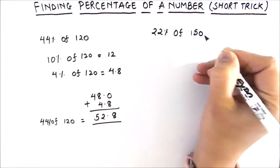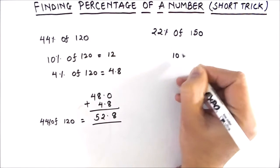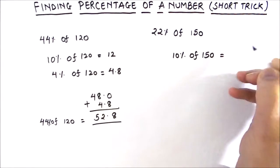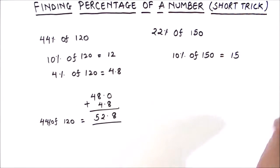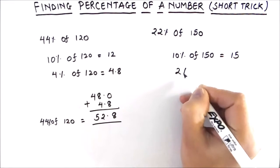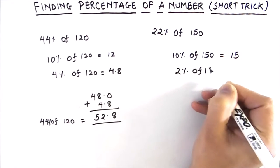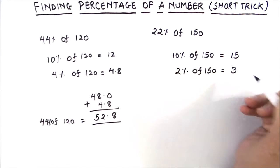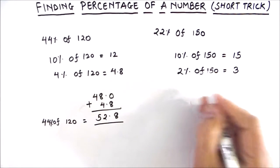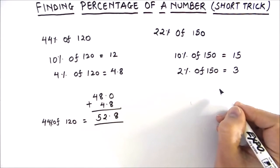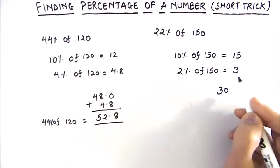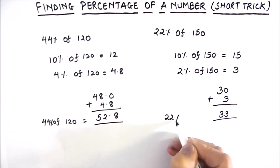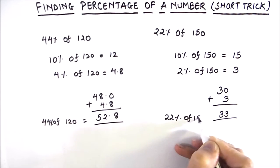Now let's find 22 percent of 150. First, we find 10 percent of 150, which is 15. Then 2 percent of 150, which is 3. To find 22 percent, we add 15 two times to get 30, and then add 2 percent which is 3. This gives us 33. So 22 percent of 150 is 33.